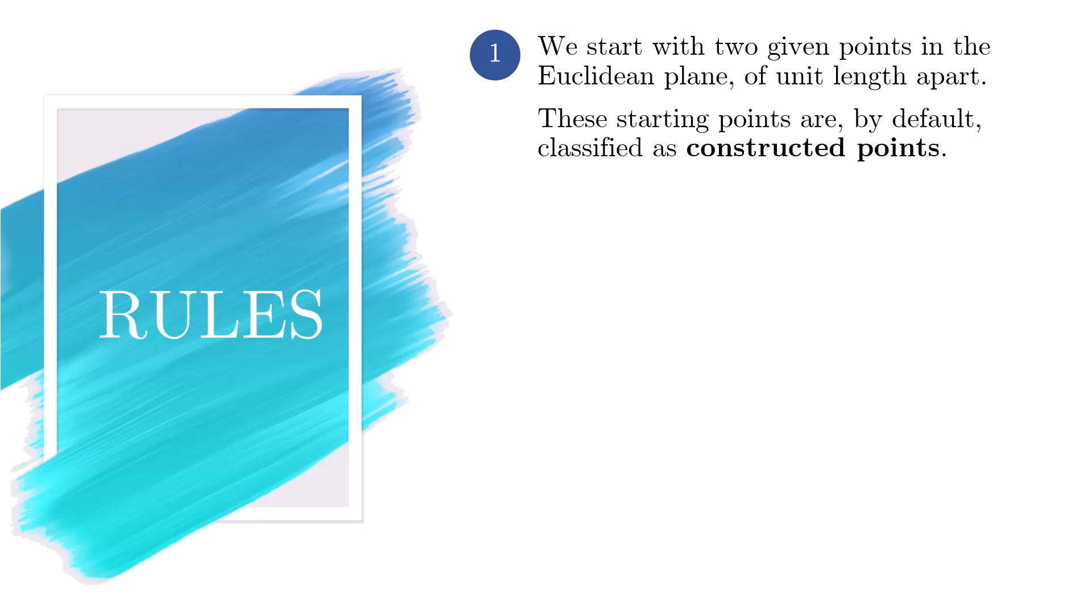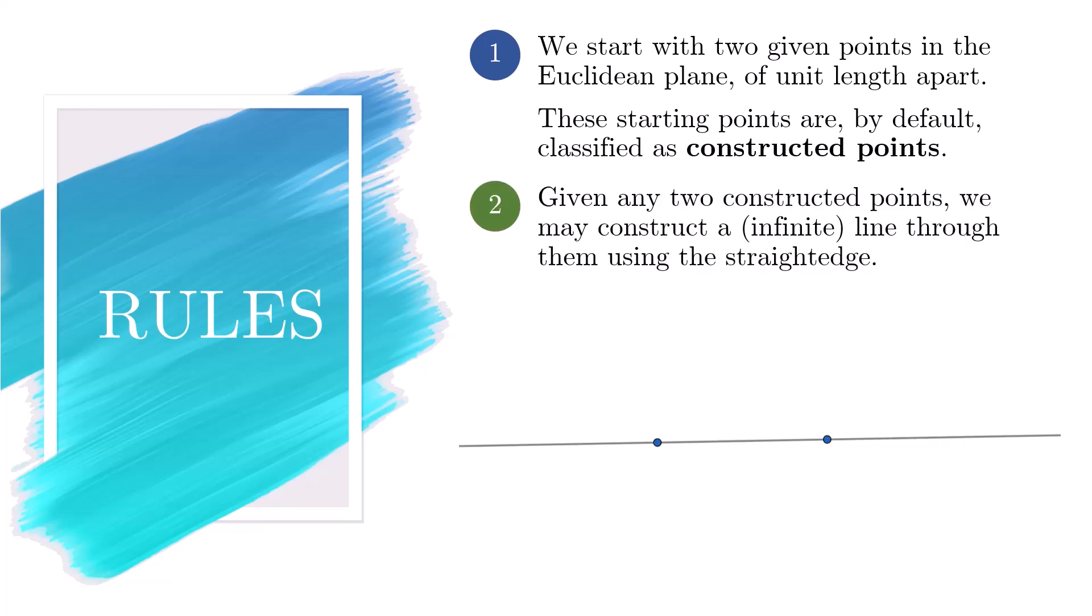Rule number 2. Given any two constructed points, we may construct an infinite line through them using the straight edge. In particular, a straight edge is different from a ruler in that the straight edge has no length markings on it.